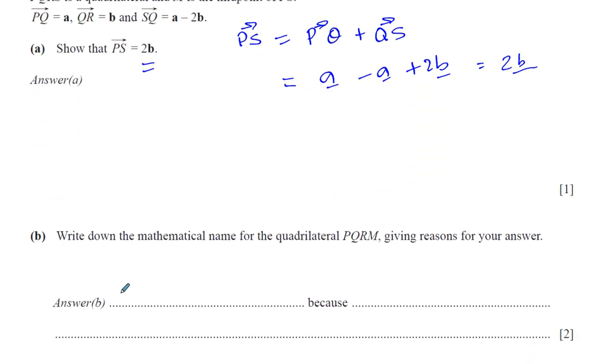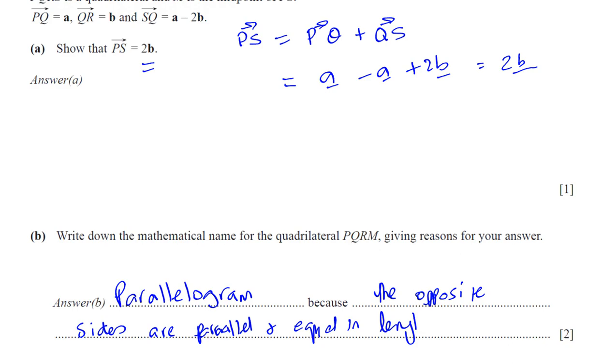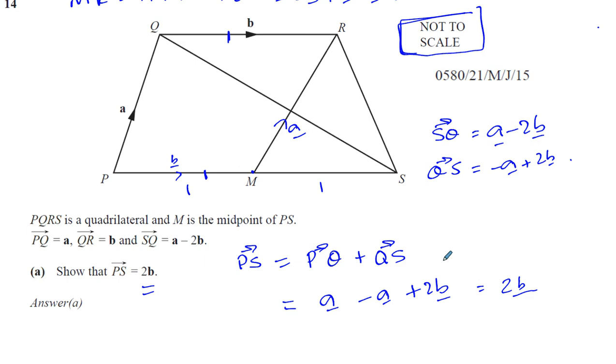So we're going to say parallelogram. Most people don't know how to spell it, including me. Parallelogram. I think that's right. Because the opposite sides, you can say the opposite sides are parallel, whoops, I spelled it wrong here, parallel and equal in length. Two pairs of parallel sides which are opposite are equal in length. So that's the answer to that question.